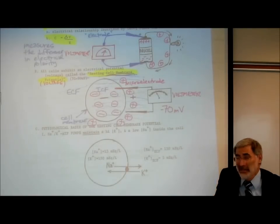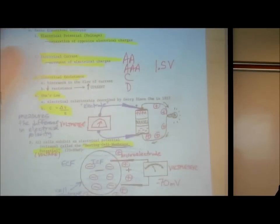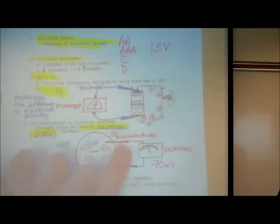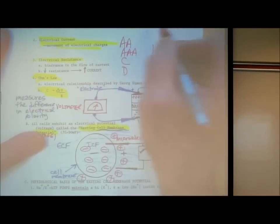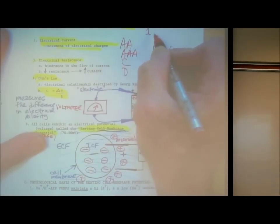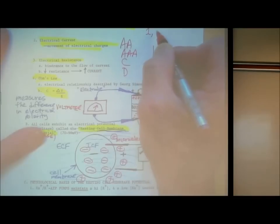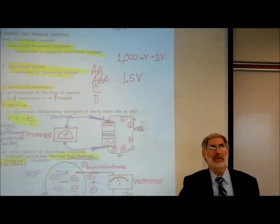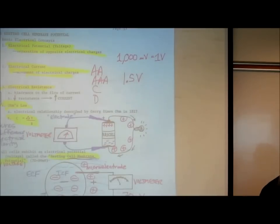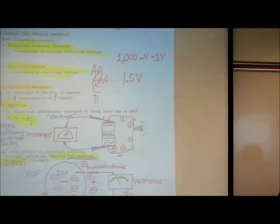What is 70 millivolts? Is that big or small? A typical flashlight battery — double-A, triple-A, C, D — is 1.5 volts. A thousand millivolts equals one volt, just like a thousand millimeters is one meter, a thousand milligrams is one gram, or a thousand milliseconds is one second. It takes a thousand millivolts to make one volt.